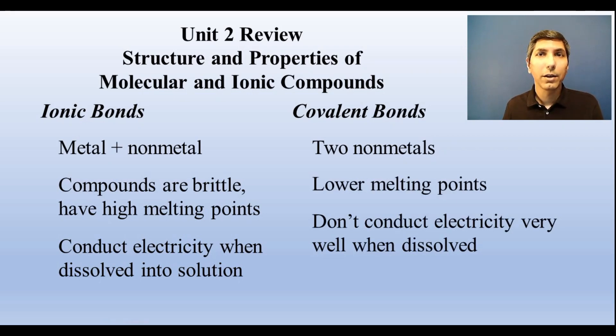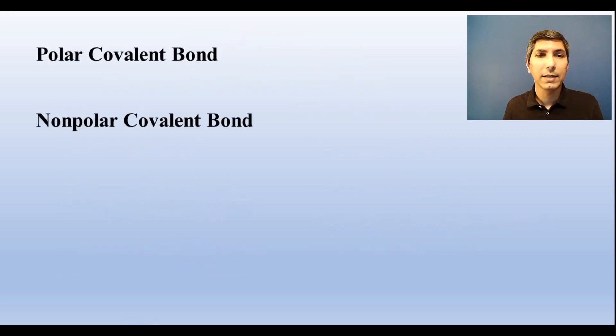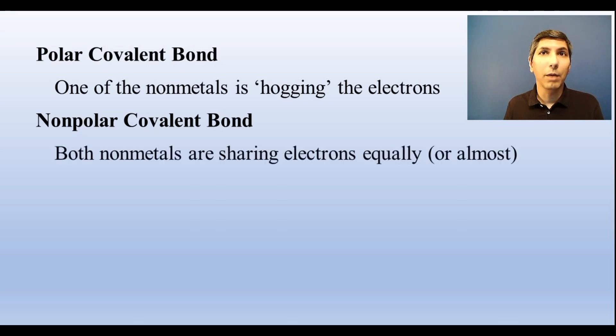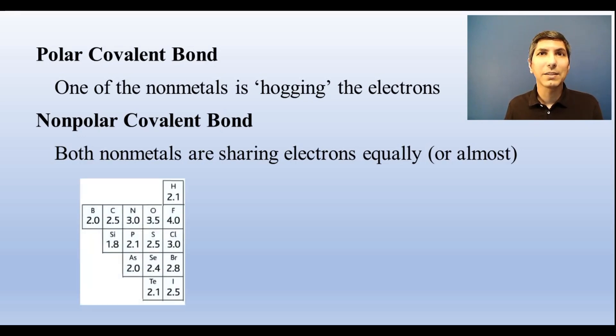We can further classify covalent bonds as polar covalent and non-polar covalent. If one of the atoms in the bond is hogging the electrons, we say it's a polar covalent bond. On the other hand, if the two atoms are sharing those electrons equally or almost equally, we say it's non-polar. To determine if the bond is polar or non-polar, look at the difference between the two atoms' electronegativities.